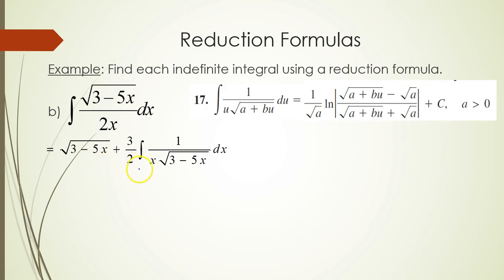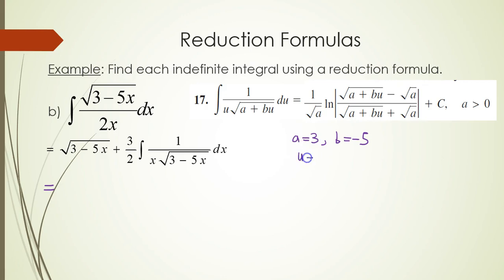We now look at that remaining integral and identify the matching formula — it will be formula number 17. We need to identify u, a, and b. Here a is 3, b is negative 5, and u is x, which means du equals dx. Formula 17 has two branches; we use the branch where a is greater than 0, since a is 3.